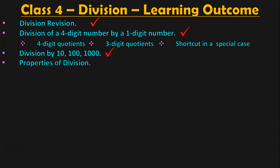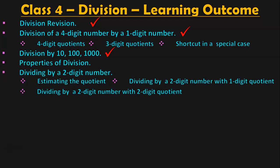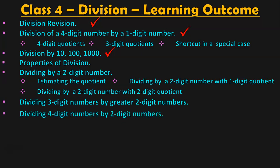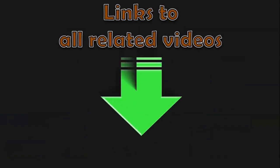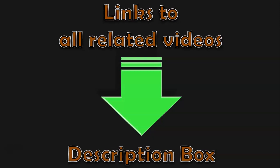In the upcoming videos, we will be seeing properties of division, dividing by a 2-digit number, estimating the quotient, dividing by a 2-digit number with single-digit quotient, and dividing by a 2-digit number with 2-digit quotient. Then we will deal with dividing 3-digit numbers by greater 2-digit numbers, and dividing 4-digit numbers by 2-digit numbers. After that, we will cover division of money, story sums applying division, and mixed story sums applying all 4 operations — addition, subtraction, multiplication and division. We will also do mental math sums and a quick division worksheet to revise all that children have learned in class 4. Links to all related videos will be in the description box and the iCard section.